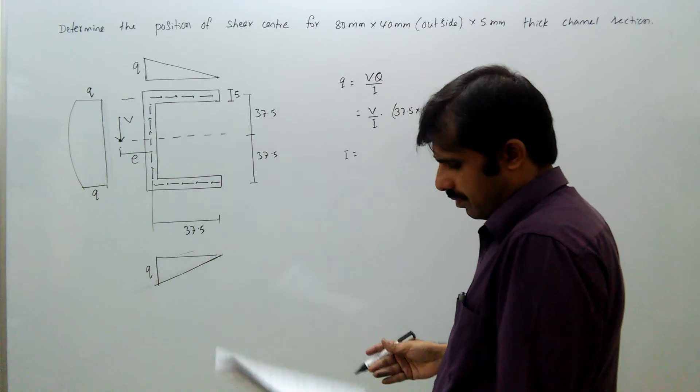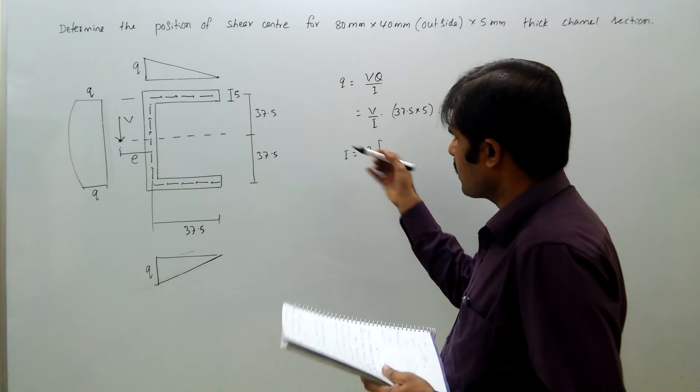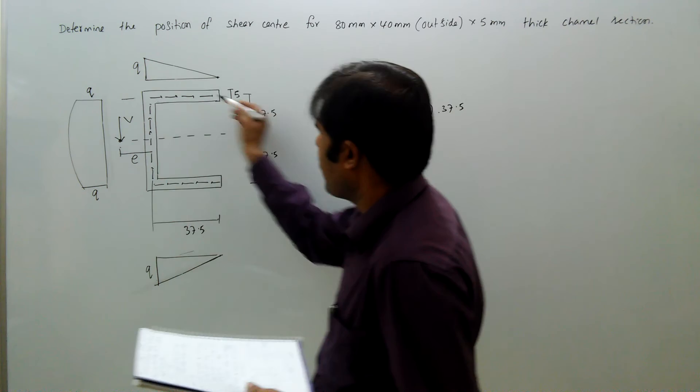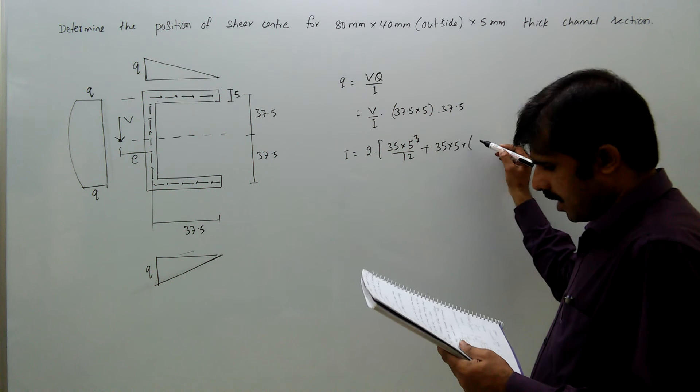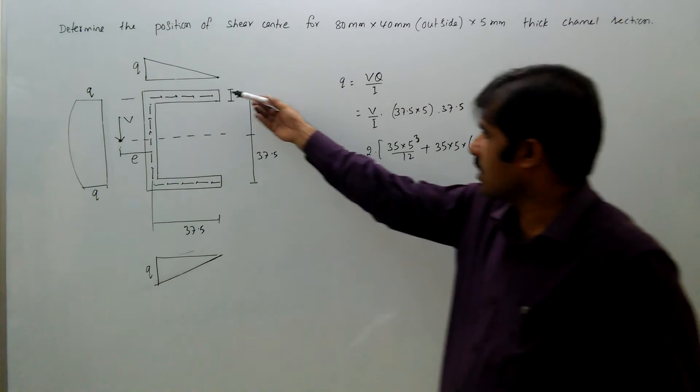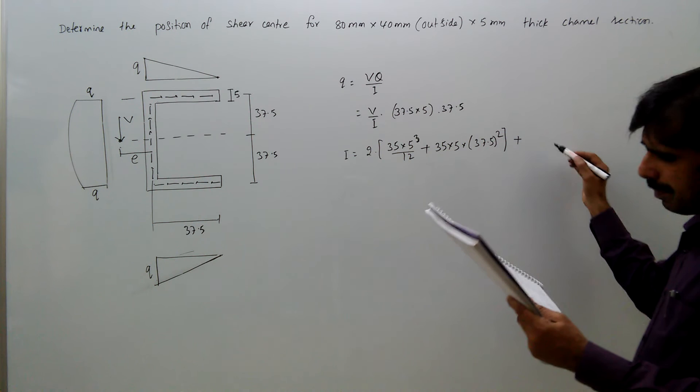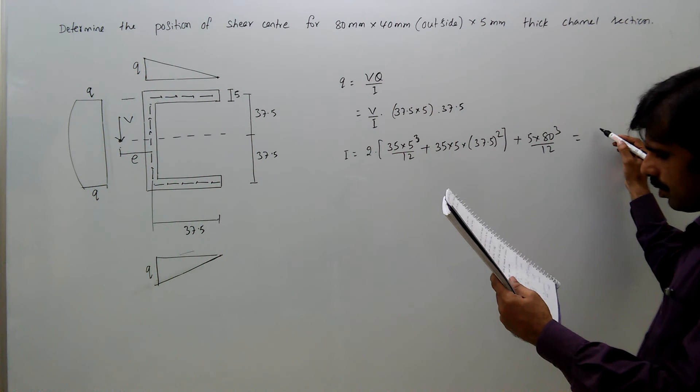The moment of inertia for this section is 2 times—since there are two flanges—suppose we take one flange: 35 times 5 cubed over 12, plus 35 times 5 is the area and center radius is 37.5 squared by parallel axis theorem, plus the web which is 5 times overall depth 80 cubed over 12. The I value comes to 706,250 mm to the power 4.